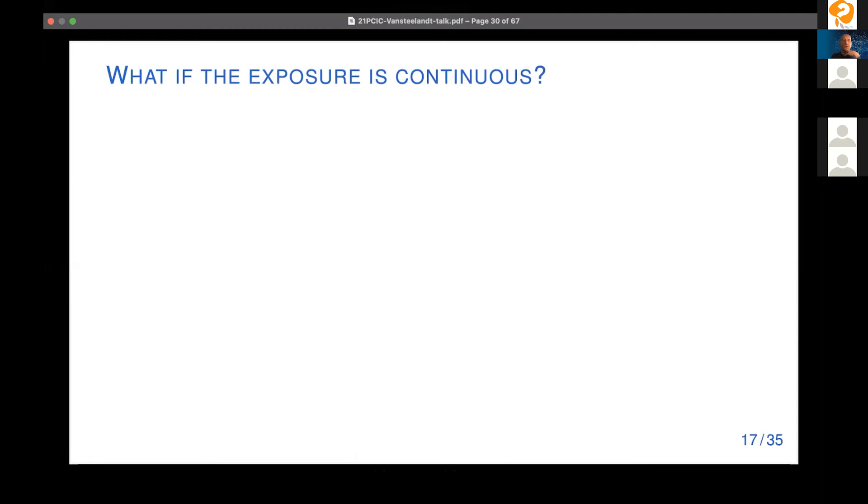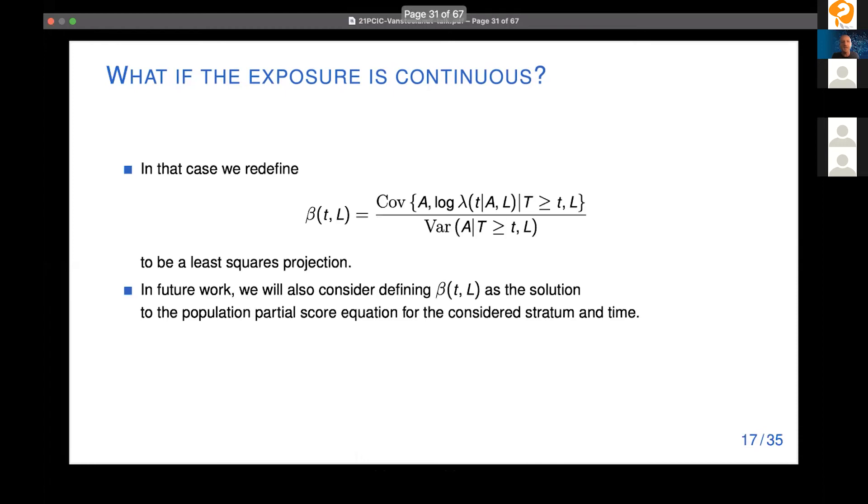What if the exposure is continuous? Well, then obviously, we will not just summarize like a log hazard ratio comparing treated and untreated. But in that case, we basically redefine these beta of T and L as like a least squares projection of the log hazards at a given time T on the exposure. And so in that sense, you could say beta of T and L gives like a linear approximation of the dependence between the log hazards and the exposure.